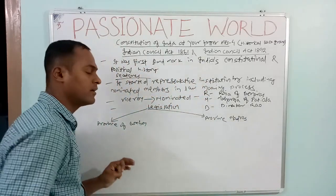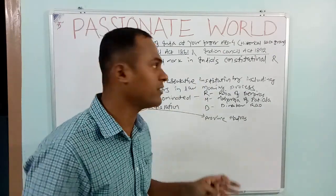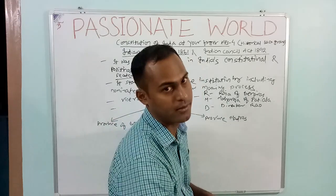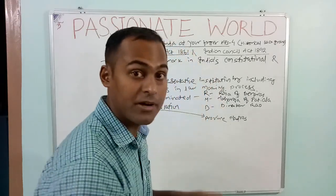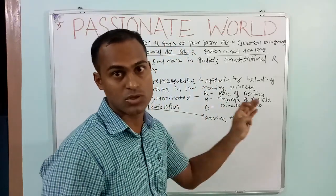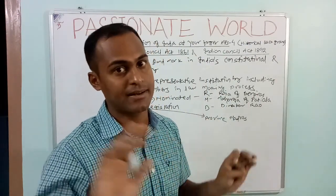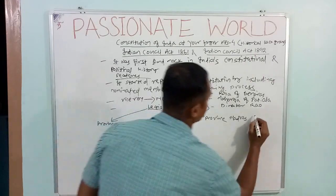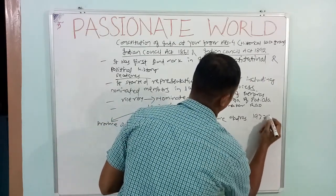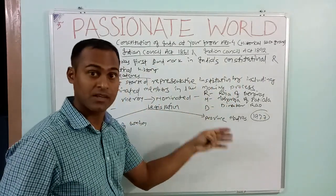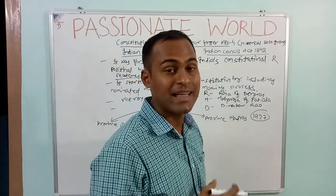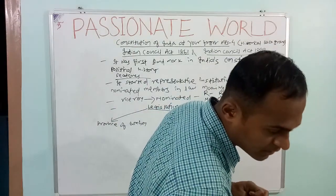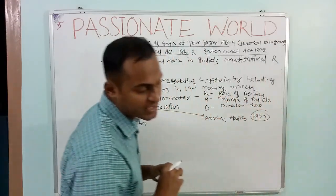The provinces of Bombay and Madras got their legislative powers back through the Indian Council Act 1861. This reversed the centralization process, and full autonomy in the provinces was slowly raised, ultimately reaching provincial autonomy in 1937, which we will study later.